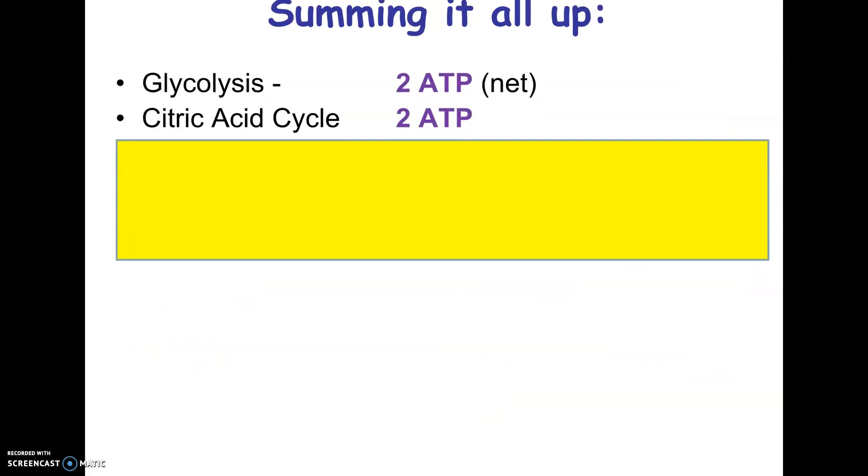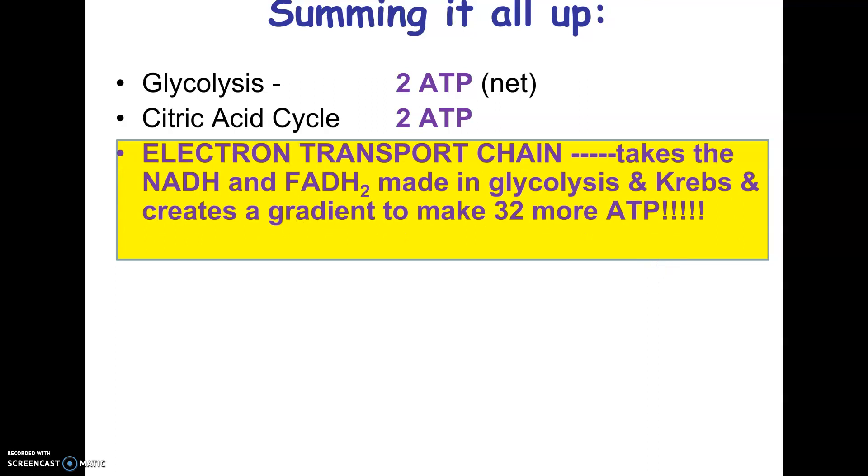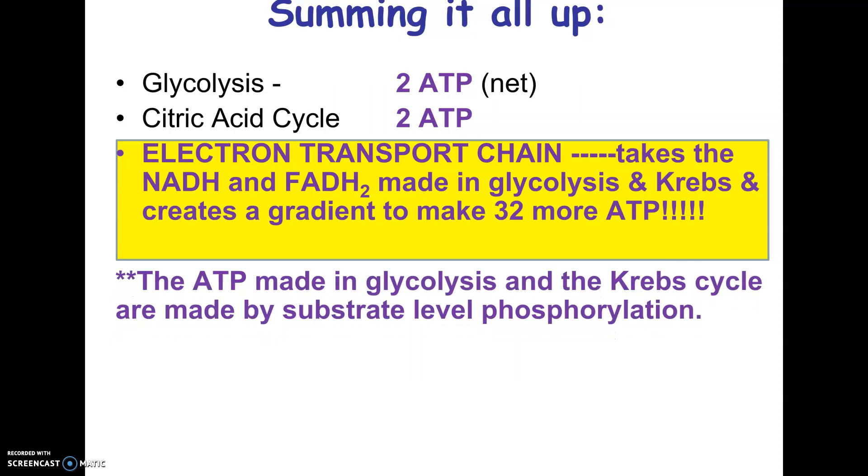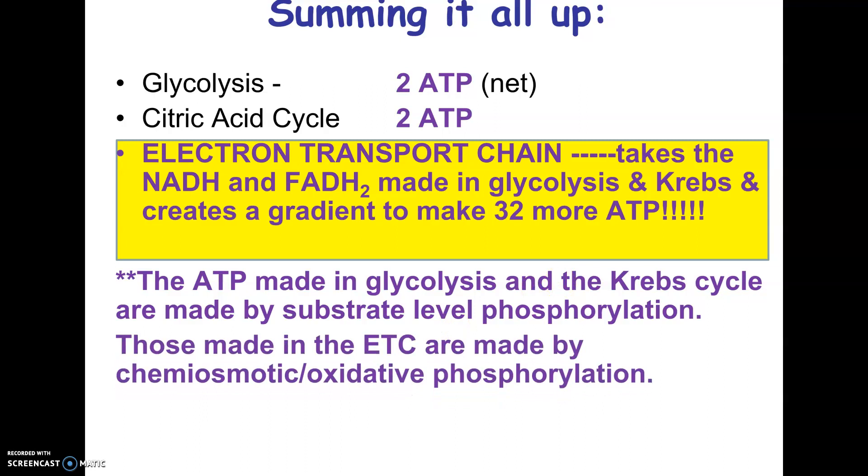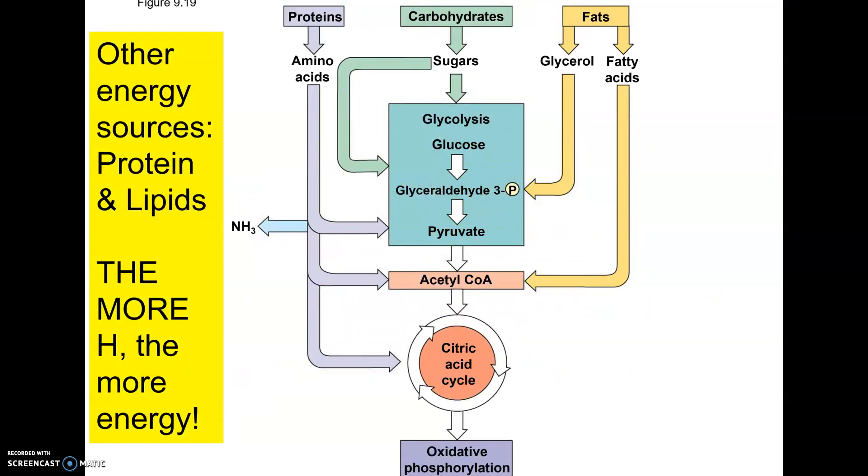And these are all going to go to the electron transport chain where you're going to make about 32 more ATP, so most of your ATP. So here's a summary. Glycolysis made a net of 2. Citric acid cycle made a net of 2, actually a total of 2. And the electron transport chain is going to make 32, about 32 more, using the chemical gradient, the electrochemical gradient created by the hydrogens being pumped across the membrane and the electron transport chain. Reminder that the ATP made in glycolysis and the Krebs cycle are made by substrate-level phosphorylation. If you recall, that is where ATP is made by literally hooking up with an enzyme that transfers a phosphate over to ADP. And the ATP that are made in the electron transport chain are made by chemiosmotic or oxidative phosphorylation, which is the way of making it using an electrochemical gradient.